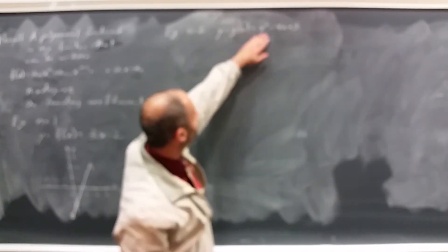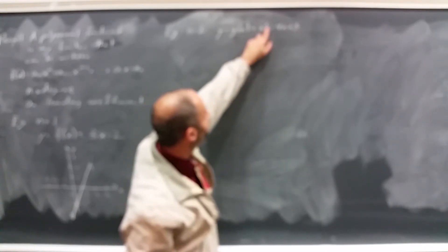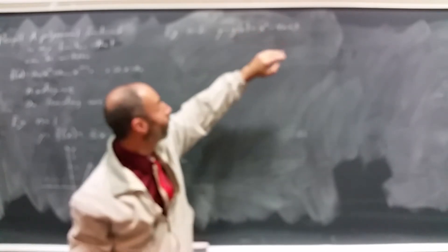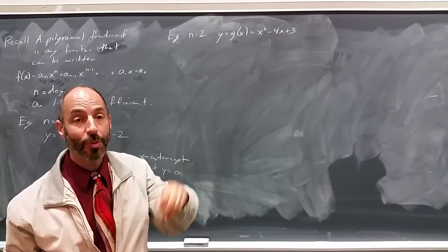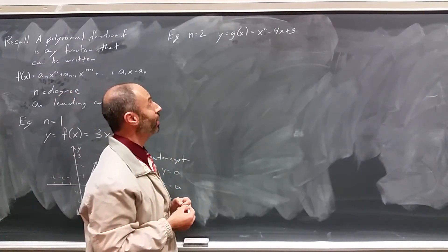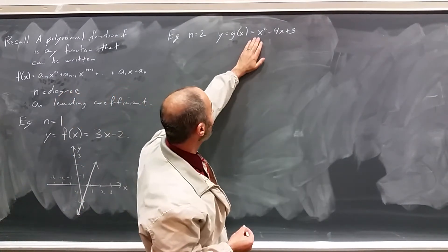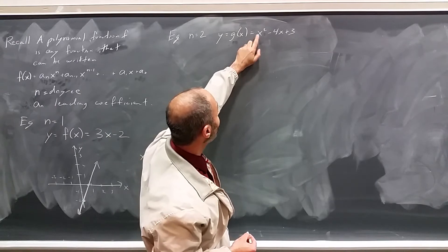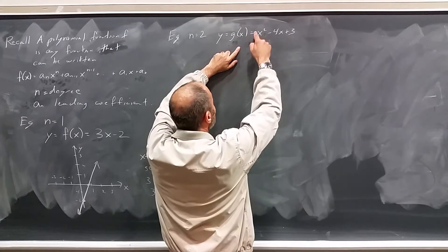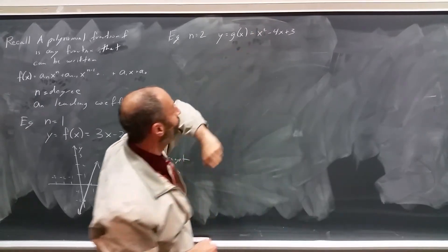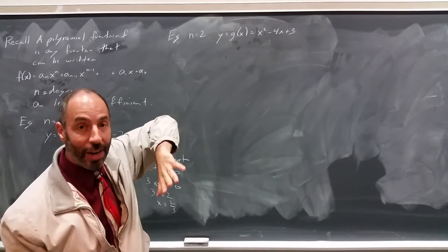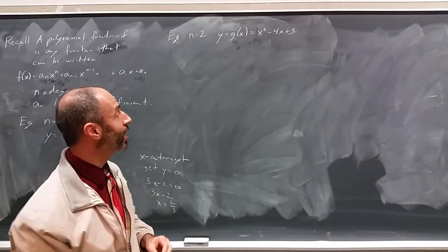We know right away this is a second degree polynomial. Its largest power of x is 2, and we know that the graphs of second degree polynomials are always parabolas. We might remember from high school that this is a right-side-up parabola because the leading coefficient, there's an invisible 1 right in front of this x², the leading coefficient is positive. Positive means we have a right-side-up parabola.